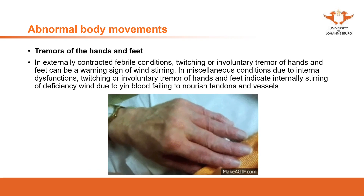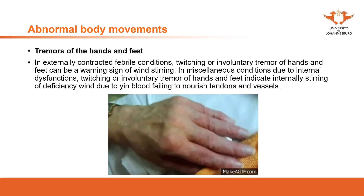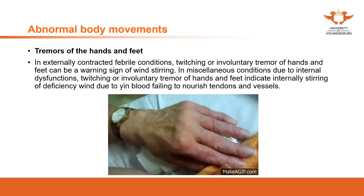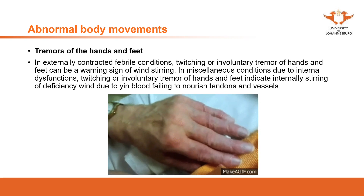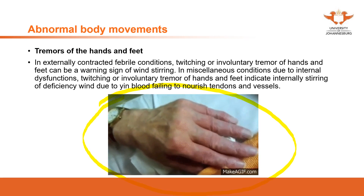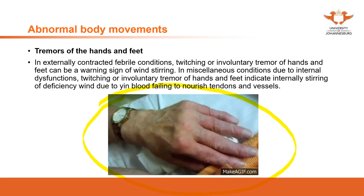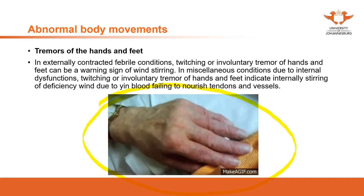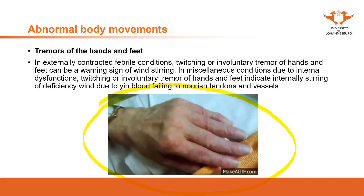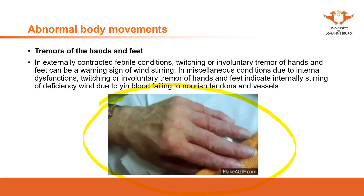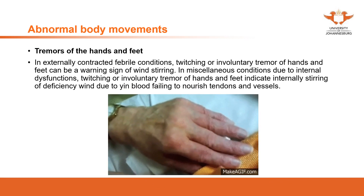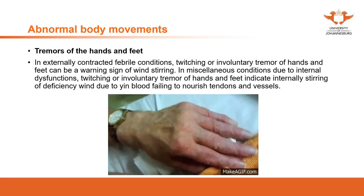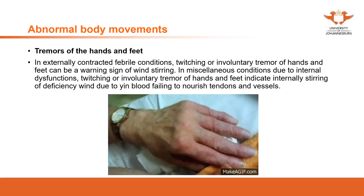Abnormal body movements — tremor of the hands and feet. Here we see images of trembling. Because this problem involves movement, when you see a patient present with this it can be trembling or Parkinson's disease, which is also a type of trembling. In treatment we're going to focus on wind — it can be hyperactive liver wind, or internal wind due to yin deficiency or blood deficiency. These are things we'll discuss more in therapeutics and pattern differentiation.